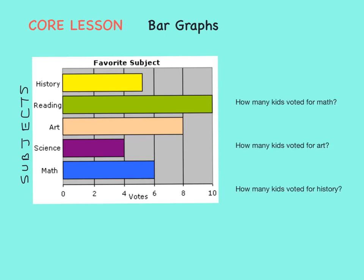How many kids voted for math as their favorite subject? First we find math on our bar graph, and here it is. The math bar is blue and it goes all the way to the line that represents six. So six kids voted for math.